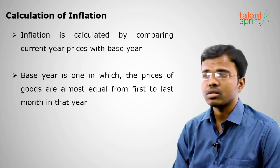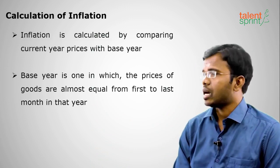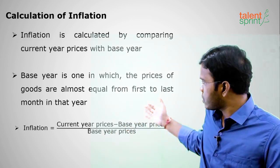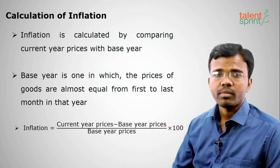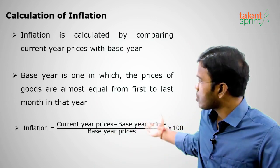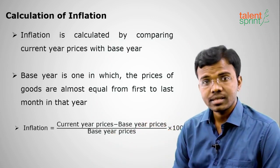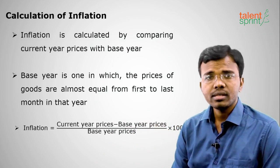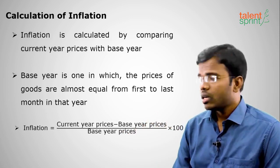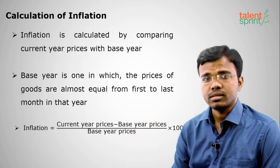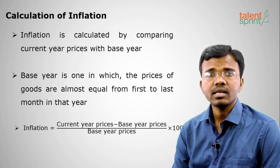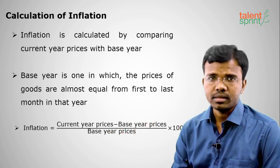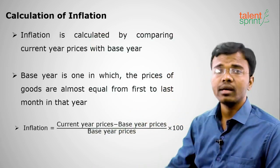In the base year the prices are almost constant from first month to last month. The formula to calculate inflation is: current year prices minus base year prices, divided by base year prices, multiplied by 100. Inflation is always calculated in percentages. If it is positive, there is an increase in prices; if it is negative, there is a decrease in prices, meaning base year prices are more than current year prices. If positive, current year prices are more than base year prices.